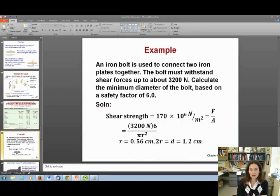Let me do another problem from your textbook. An iron bolt is used to connect two iron plates together, and the bolt has to withstand shear forces of up to 3,200 newtons. Calculate the minimum diameter of the bolt based on a safety factor of six. If you look up in that table what the shear strength is for iron, you get 170 times 10 to the sixth newtons per meter squared. That shear strength equals the force per unit area it can withstand. The force we were given is 3,200 newtons, but because we want to include that safety factor of six, we include that factor.